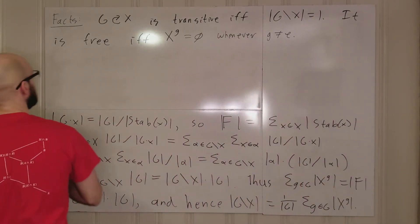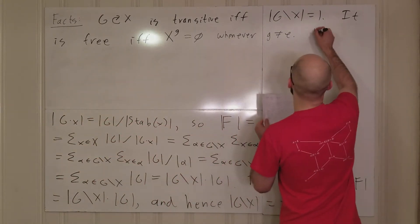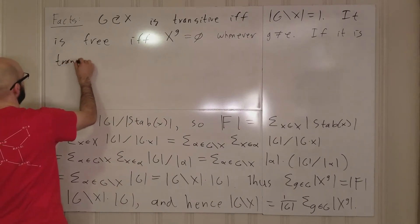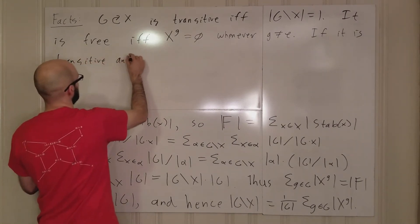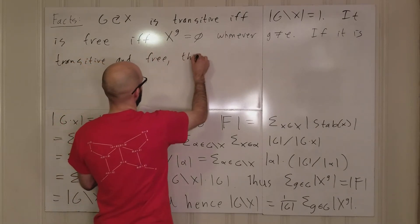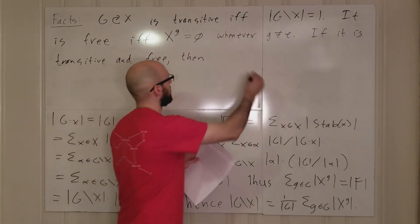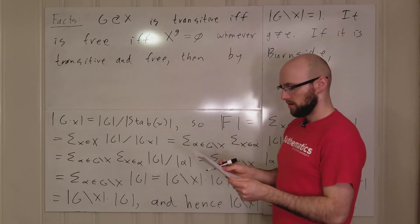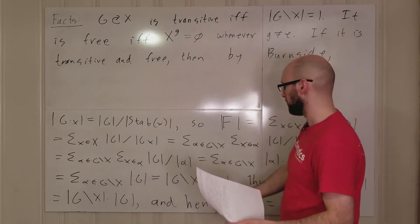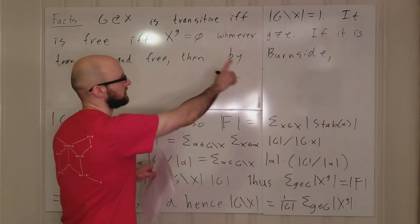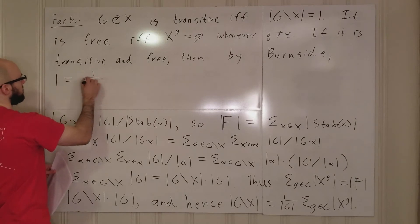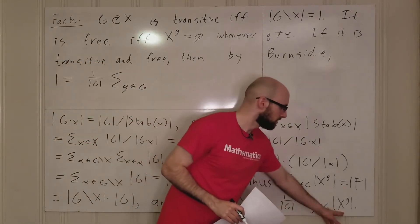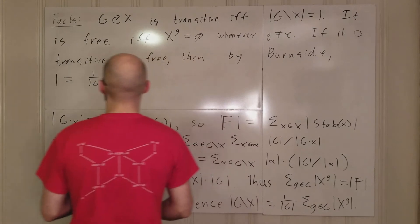What happens if the group action is both transitive and free? Then by Burnside's lemma, the number of orbits is one (transitive), so we get: 1 = (1/|G|) times the sum over all g in G of |X^g|.